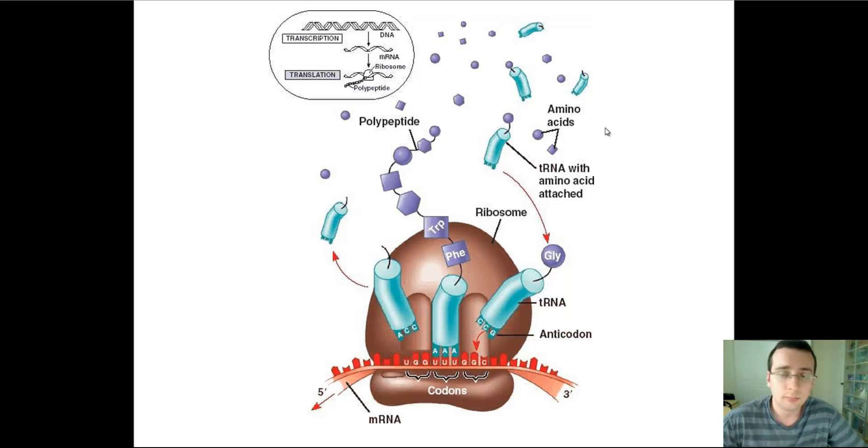The transfer RNA is the shape that it is because it needs to attach to the ribosome, to the amino acid, and to the codon of the messenger RNA. The ribosome is the shape that it is because it has catalytic and structural functions. And the messenger RNA needs to be straight like it is because it makes it easier to read in between the two subunits of the ribosomal RNA.